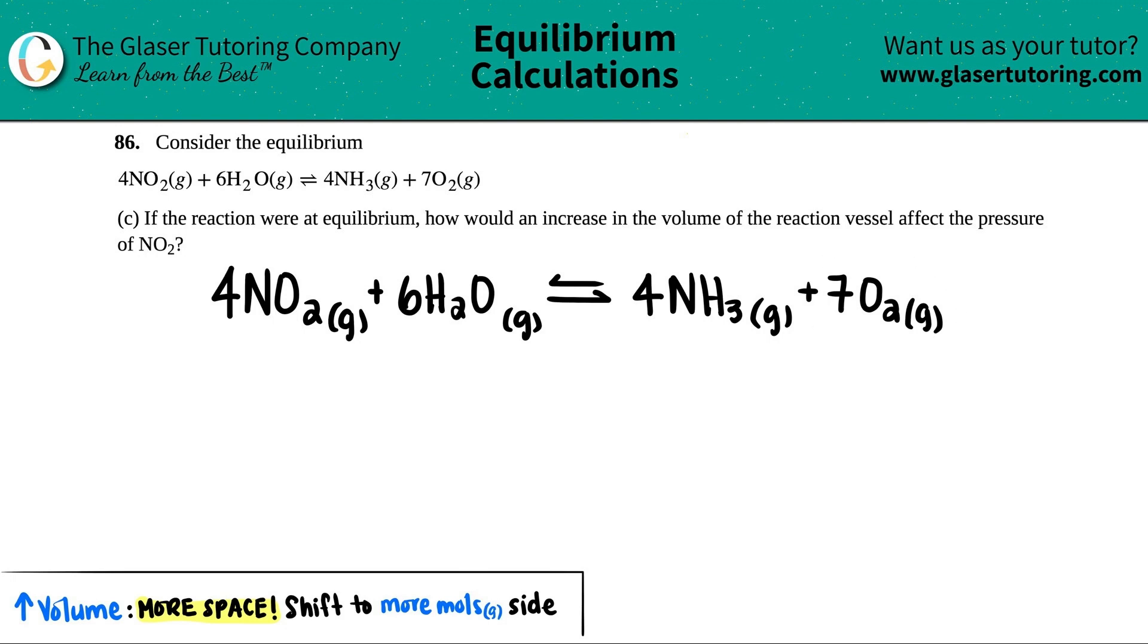And then we're letter C in this question. They said, if the reaction were at equilibrium, how would an increase in the volume of the reaction vessel affect the pressure of NO2?